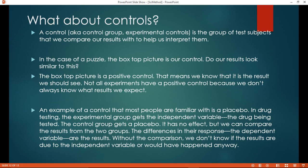One thing I haven't talked about is controls. What are controls? They're a group of test subjects that we compare our results with to help us interpret them. In the case of a puzzle, it could be the box top picture. I compare my end results with the box top. Is it similar? Yes. Well, then I have the right picture. We don't always have positive control because we don't always know the end results.